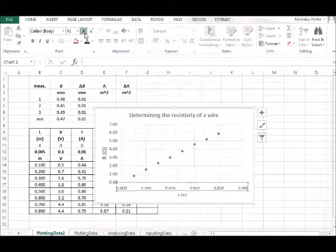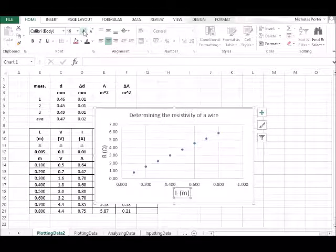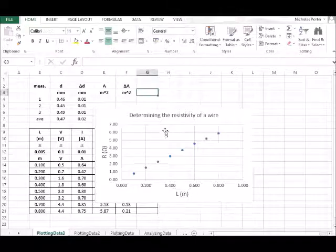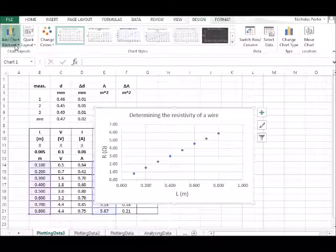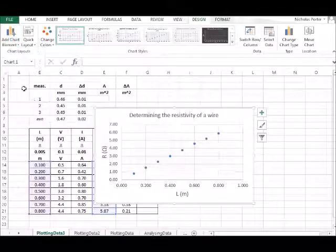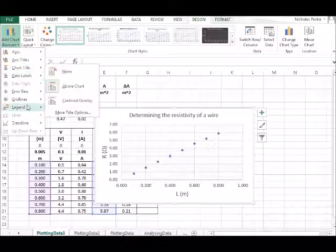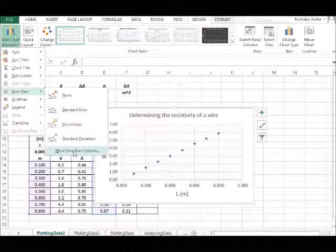Once we've got our graph the way that we like it, we can start thinking about how to plot this uncertainty, and to do that we can add error bars. So again, if we go to design, then add chart element, and go to error bars, we can choose our error bars.